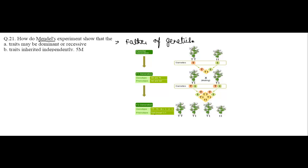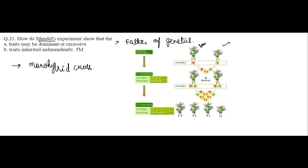Mendel crossed pure-bred tall pea plants with pure-bred dwarf pea plants and found that only tall pea plants were produced in the F1 generation. He took one pair of contrasting characters between two plants, so this cross is known as a monohybrid cross, where pure tall and pure dwarf pea plants were crossed.